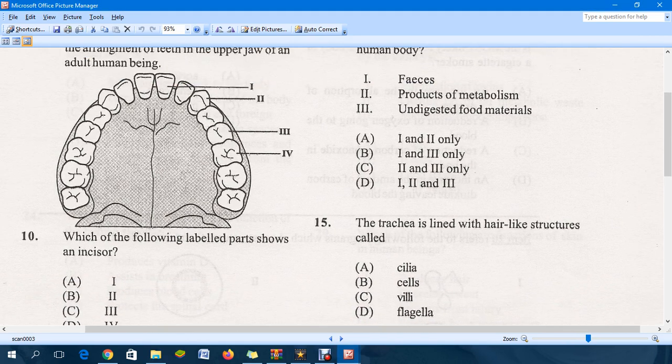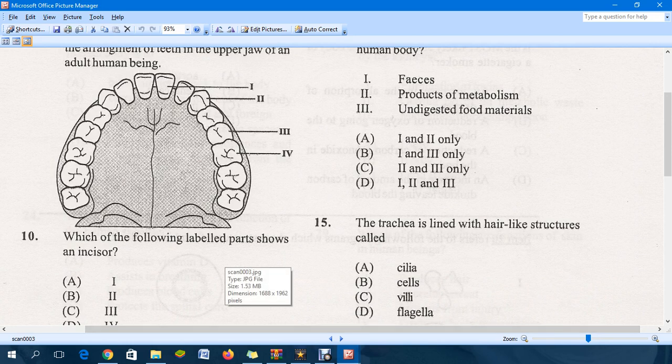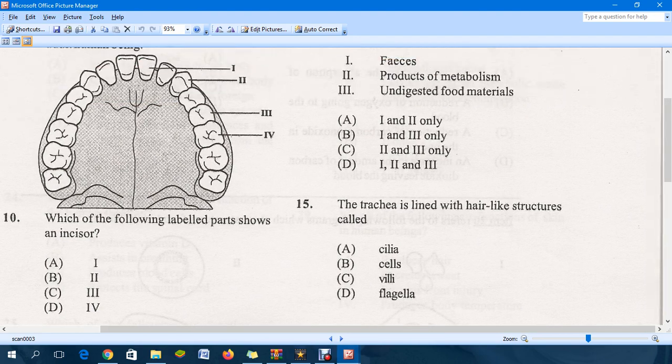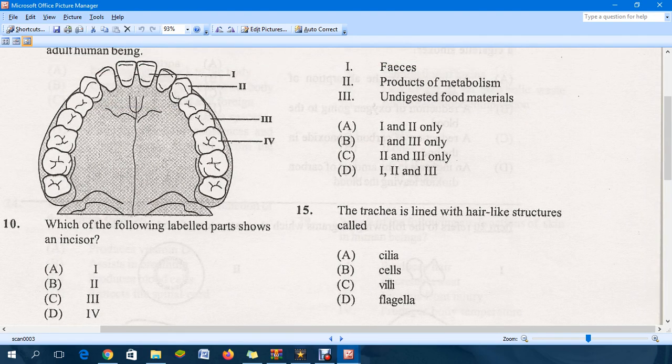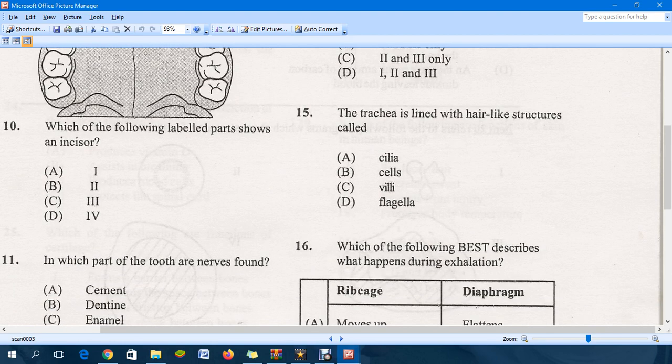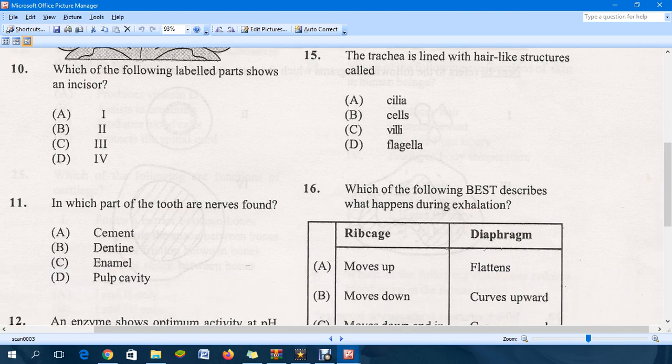The question asks which of the following labeled parts shows an incisor. The answer for that is actually A. A is what's referred to as the incisor. This one here is of course the canine, so definitely A is the answer there. Moving down to question 11.